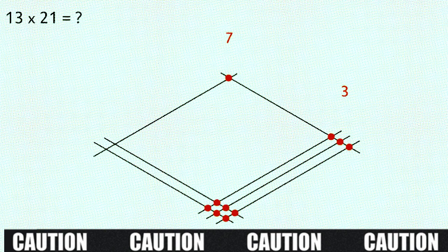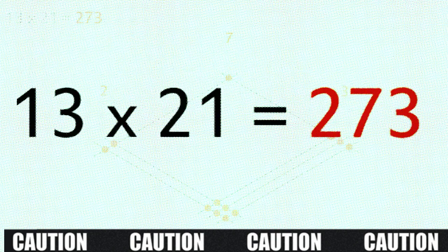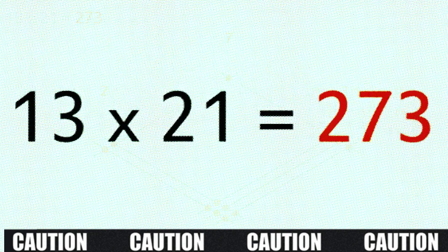Then move on to the last zone and do exactly the same again, 1, 2, 3. And that gives us our answer, 13 times 21 is 273. Pretty cool huh?